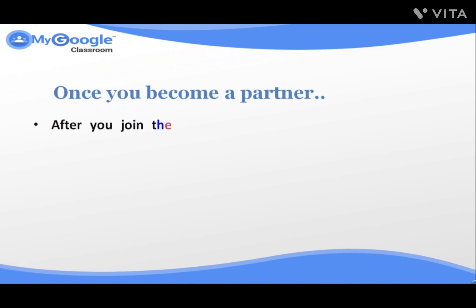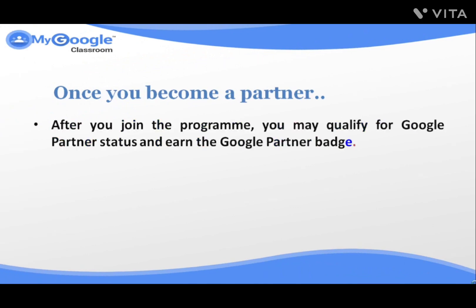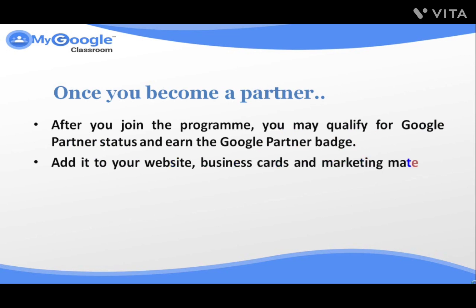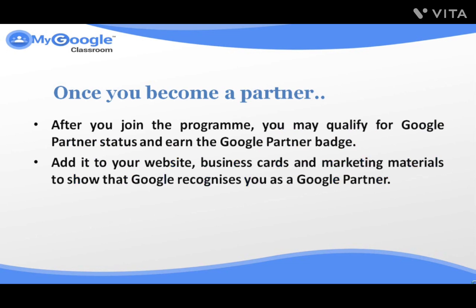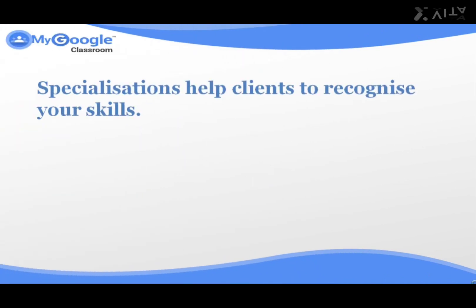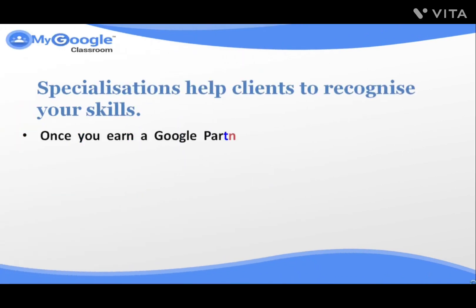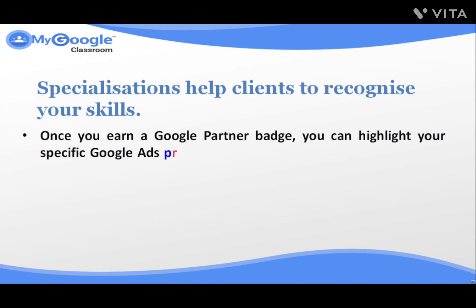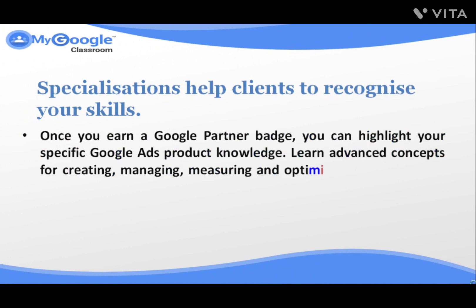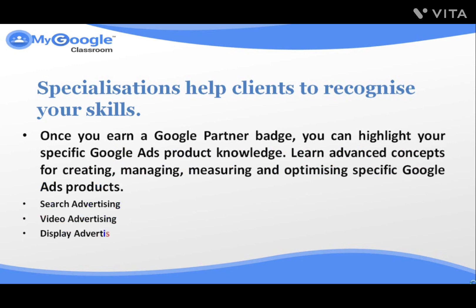Once you become a partner, after you join the program, you may qualify for Google partner status and earn the Google partner badge. Add it to your website, business card, and marketing materials to show that Google recognizes you as a Google partner. Specialization helps clients recognize your skills — once you earn a Google partner badge, you can highlight your specific Google ad product knowledge. Learn advanced concepts for creating, managing, measuring, and optimizing specific Google ad products: search advertising, video advertising, display advertising, and shopping advertising.